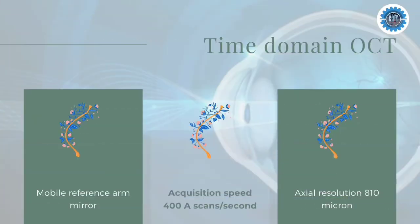Time Domain Optical Coherence Tomography provides two-dimensional images of internal structures. The tissue information in depth is obtained by a mirror in the mobile reference arm which is moving. The acquisition speed of Time Domain OCT is about 400 A-scans per second, and its axial resolution is about 8 to 10 microns.